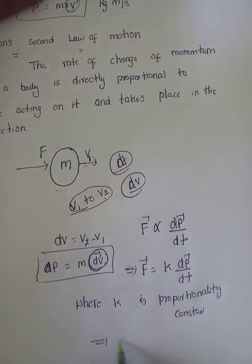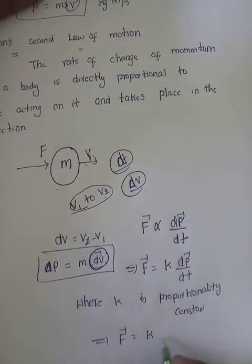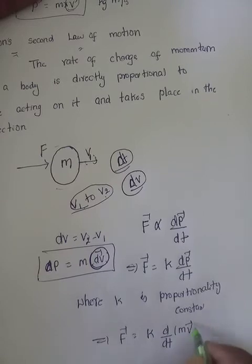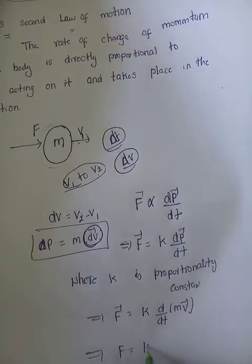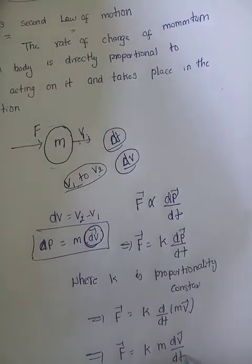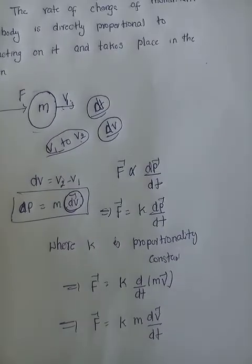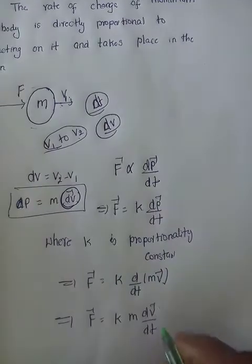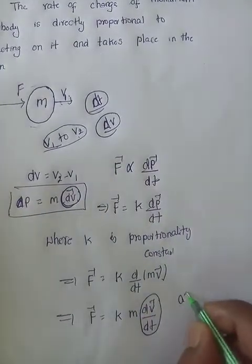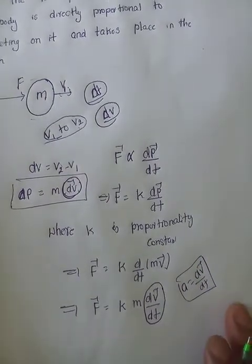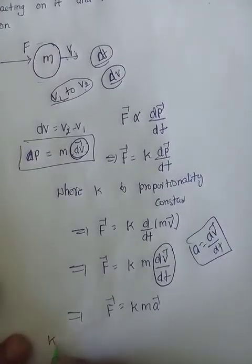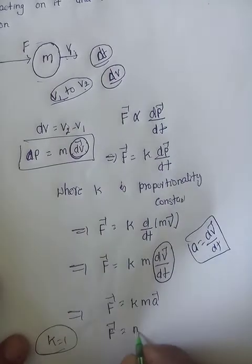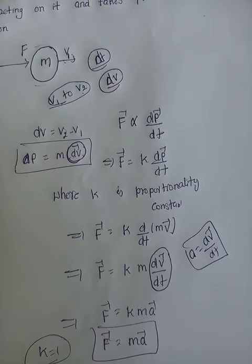Since dp equals m times dv, we get F equals k times d/dt of (m·v). Since the mass of the body remains constant when force is applied, this gives F equals k times dv/dt. Now dv/dt is the rate of change of velocity, which is acceleration. Therefore F equals k times m times a. Since k equals 1, we get F equals m times a. This is the derivation of Newton's second law of motion.